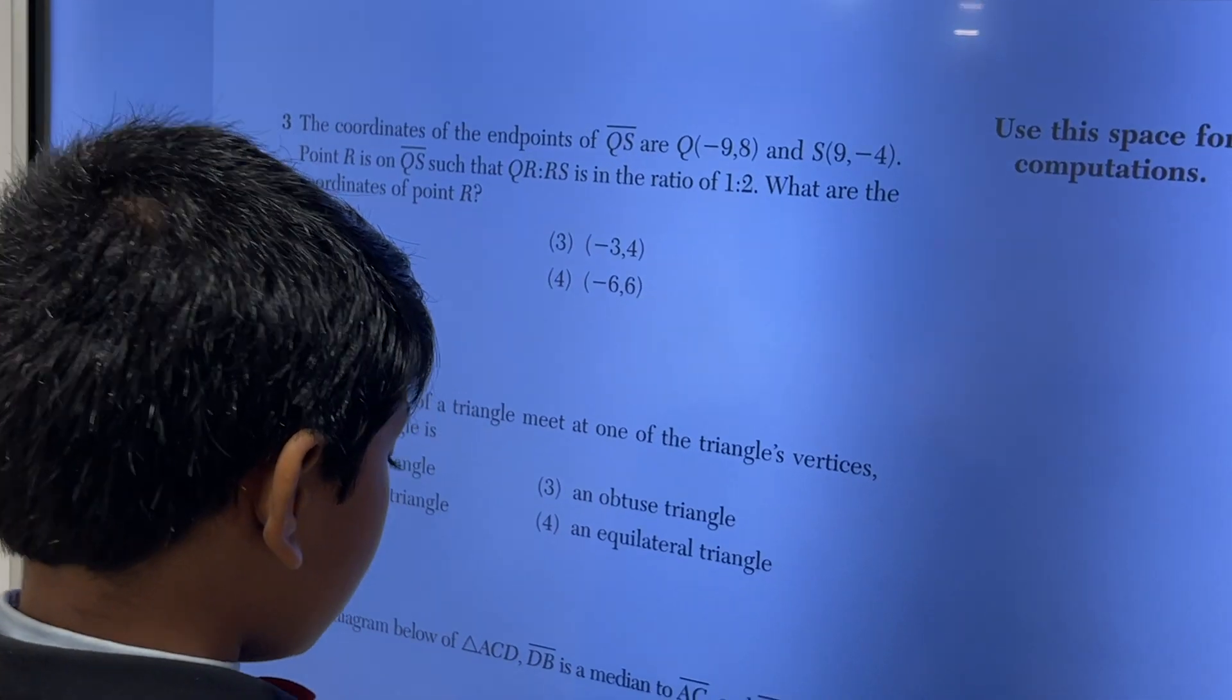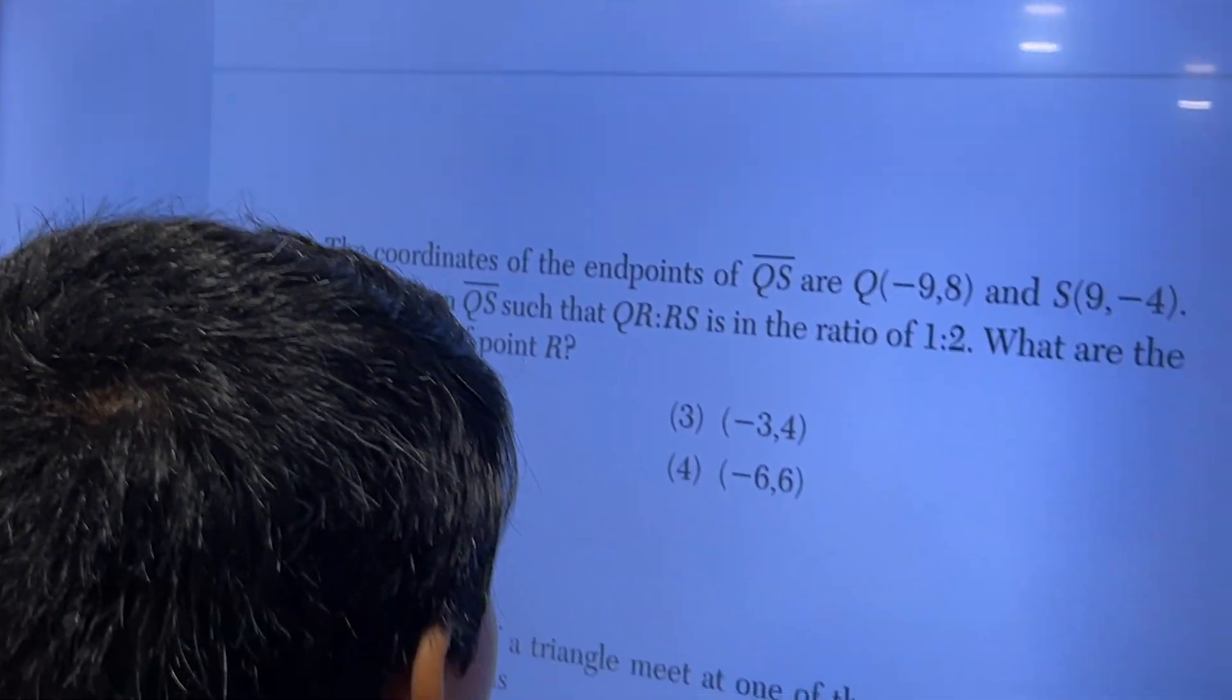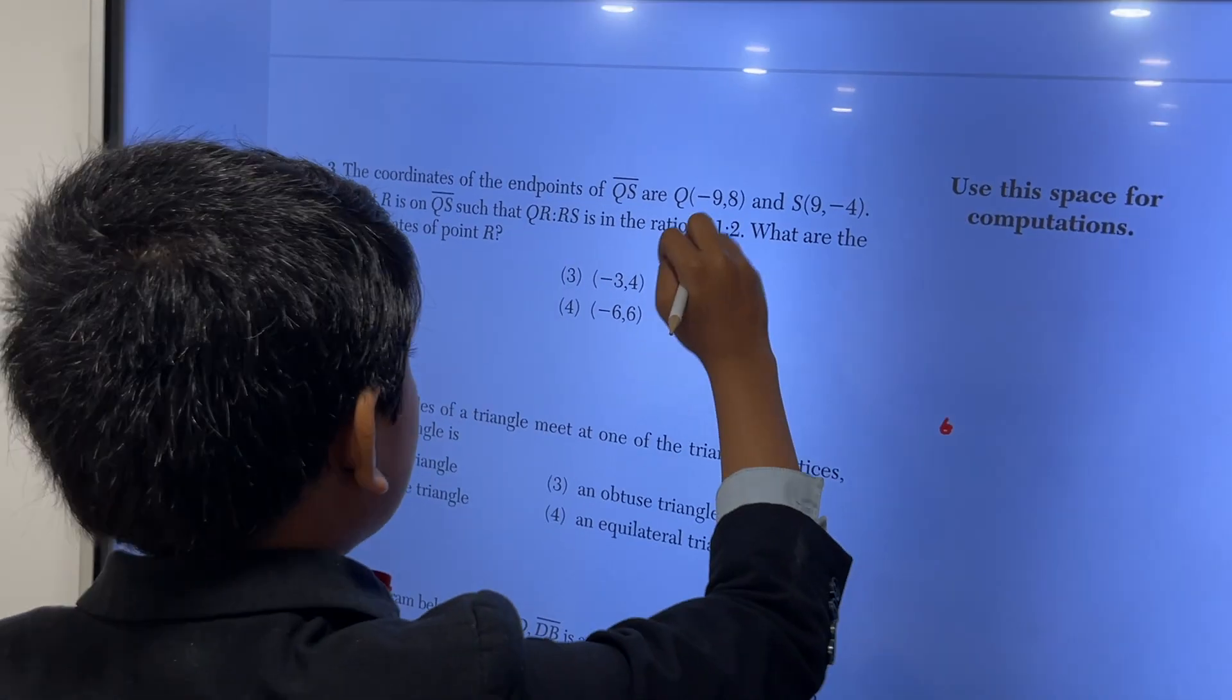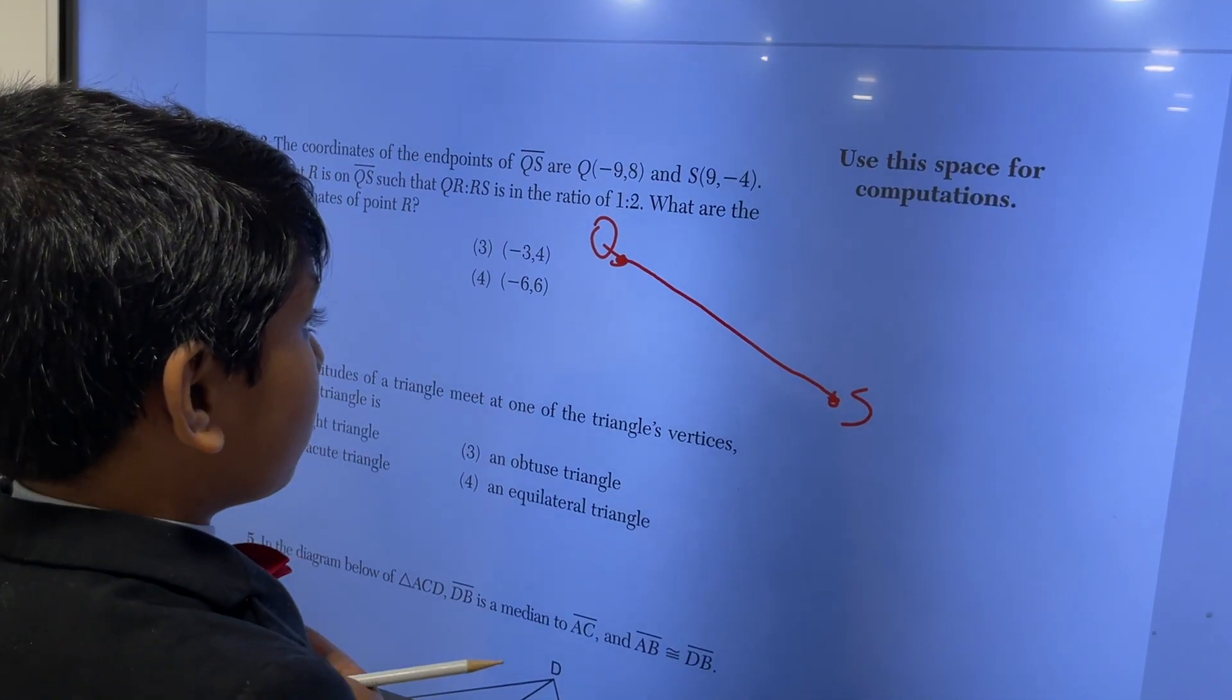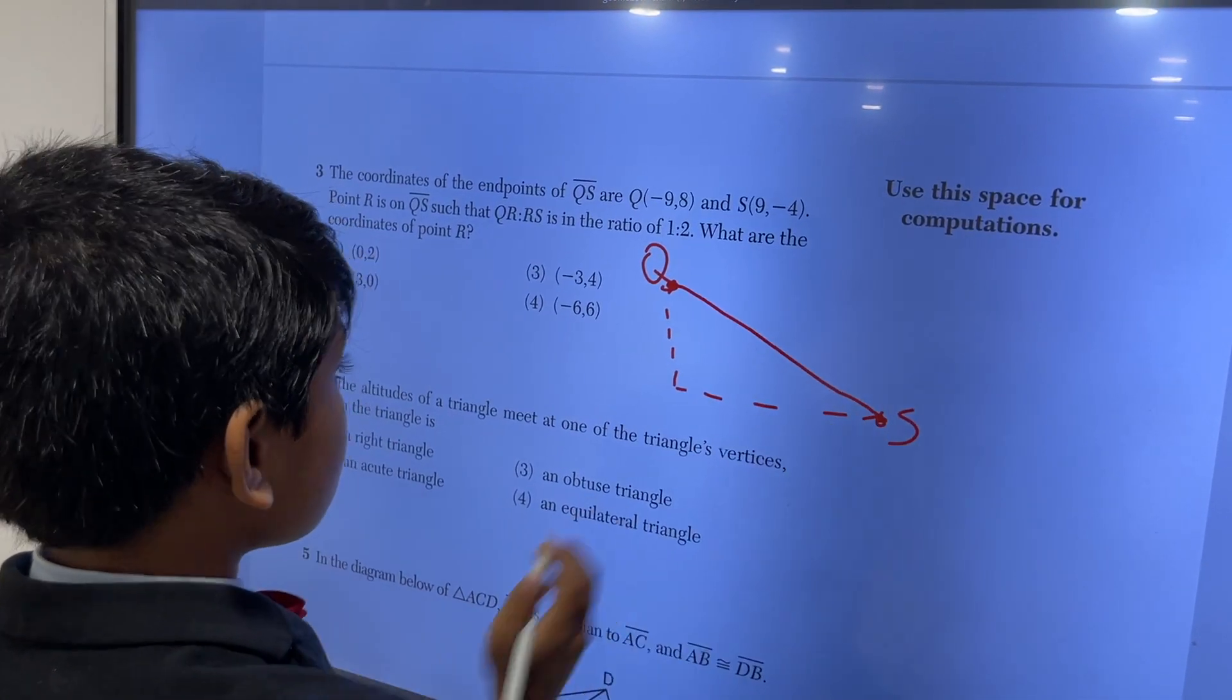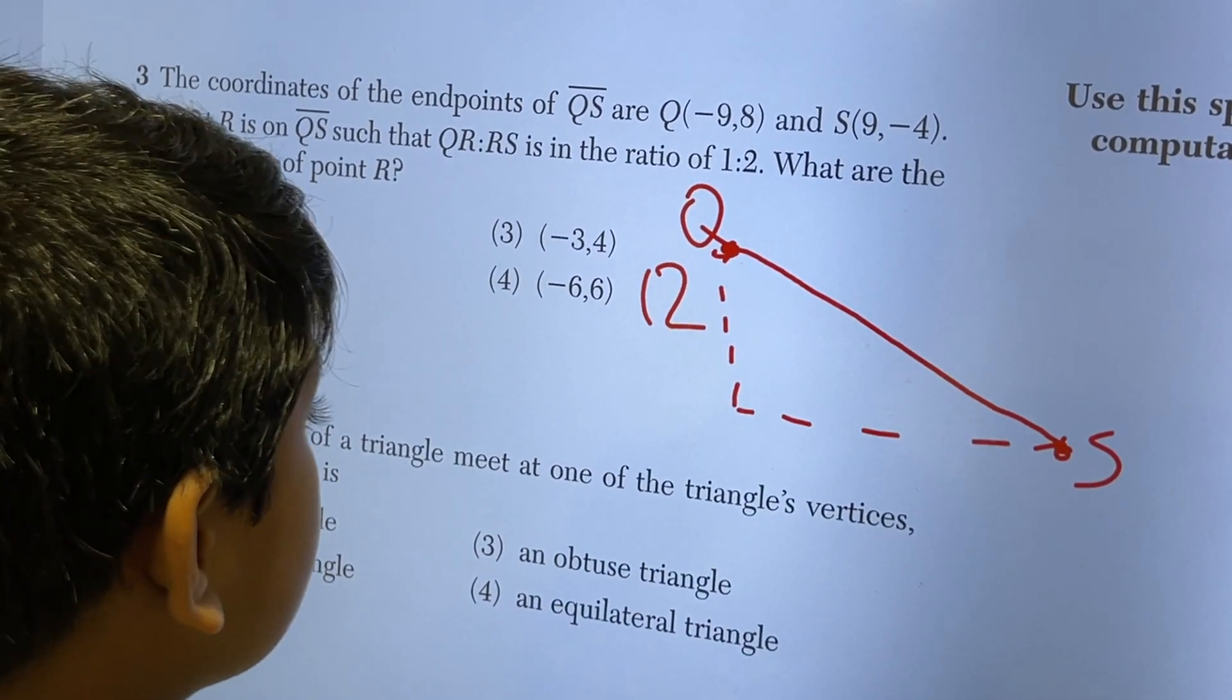So number 3. The coordinates of the endpoints of QS are Q negative 9, 8 and S 9, negative 4. Point R is on QS such that QR to RS is in the ratio of 1 to 2. What are the coordinates of point R? Well, first of all, this is Q and this is S. They provide scrap graph paper at the end of the exam for you to do this on your own. But that scrap graph paper is right all the way at the end of this exam. So it wouldn't be viable for us to do it with the smart board. So this would be Y2 minus Y1, which would be 12. This would be X2 minus X1, which would be 18.